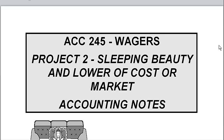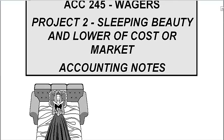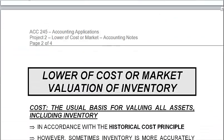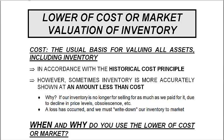Project 2 deals with the lower of cost or market issue. This relates to accounting for inventory, so let's review this topic first. The general rule is that we record assets at what we paid for them — their historical cost — although sometimes it's appropriate to show inventory at an amount less than what it originally cost us, if the inventory has gone down in value and it would be misleading to leave it on our books at its original cost.